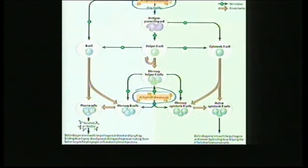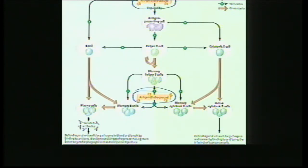In innate immunity you don't require any prior exposure — it is already in your body at birth. Whereas for acquired immunity, you need to be exposed to a pathogen — a virus, bacteria, or any kind of antigen — so that you develop this acquired immune system. Similarly, for T cells you also have memory cells, but T cells do not produce antibodies; it is the B cells that produce antibodies, which are really very important for the immune system.